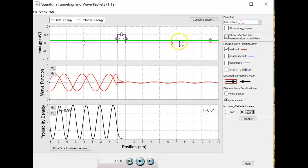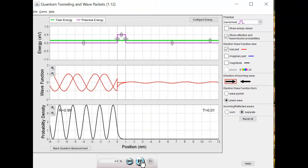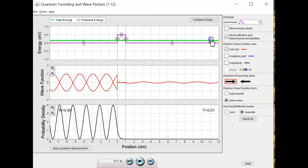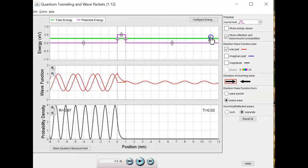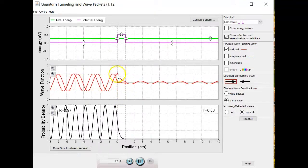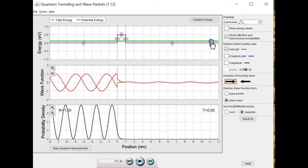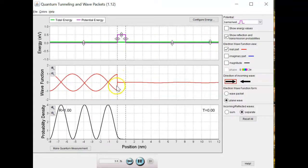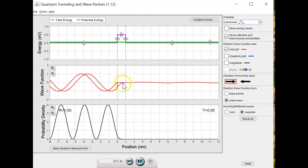So now, why does decreasing the energy of the plane wave decrease your transmission probability? Now it's 0.01. And the answer is that when we decrease the energy, this exponential decay happens faster. So as I make this bigger, you can see now that it makes it over here and has a higher amplitude, because this exponential decay isn't as fast. If I make this really low, now it happens really quickly. You can see that it really comes down and is hitting zero, even when it's maybe halfway.